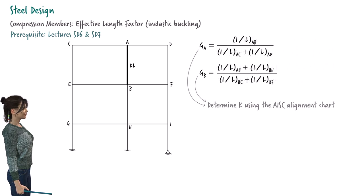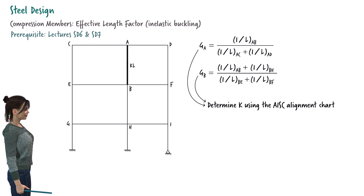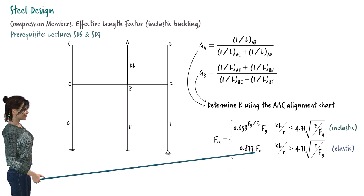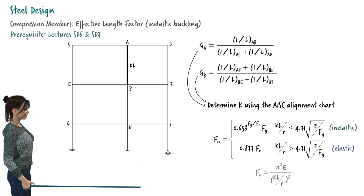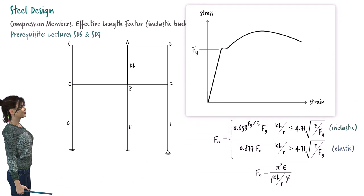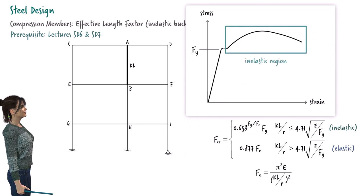We then use the alignment chart given in the AISC manual to determine K. Knowing K, we can calculate the flexural buckling strength for the column using these two equations. F sub E represents Euler's buckling equation. These equations indicate that the column could buckle when the axial stress is large enough to place the member in the inelastic region of the stress-strain diagram.